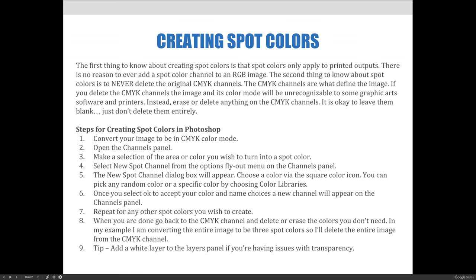When you do this, the new spot channel dialog box appears and you choose a color via the square color icon. Spot colors don't have to be Pantone colors — you can pick any specific color from a chart or choose from a color library like Pantone 185. Once you select okay, your channel automatically appears on the channels panel in the shape of your selection. Repeat that for any additional spot colors — we'll do it three times for blue, orange, and black.